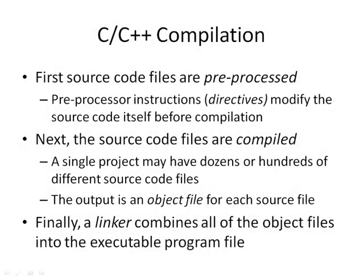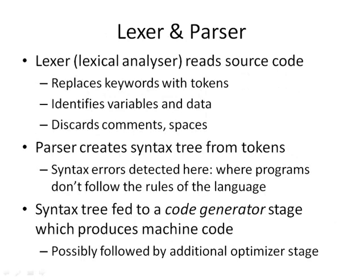After the pre-processor has done its job — and there can also be commands inside the pre-processor to switch different bits of source code on and off — the source code files are compiled. A single project may have dozens or hundreds of different source code files making up one project. Each source code file that's compiled creates an object file: essentially a compiled output for each file in machine code, but stand-alone files that need to be combined to make the final executable. This is where a separate program called the linker comes into play.